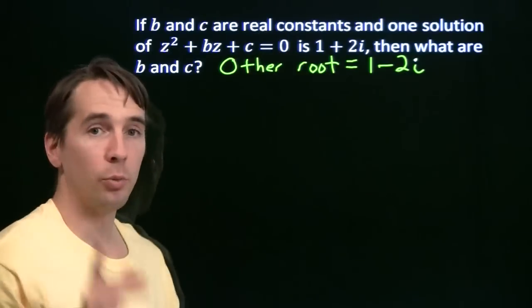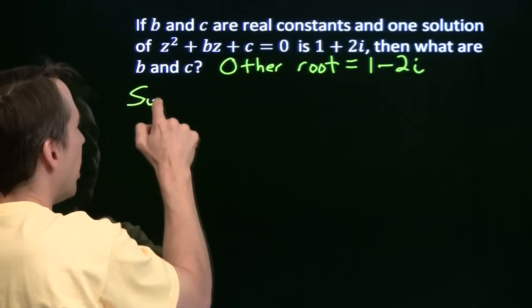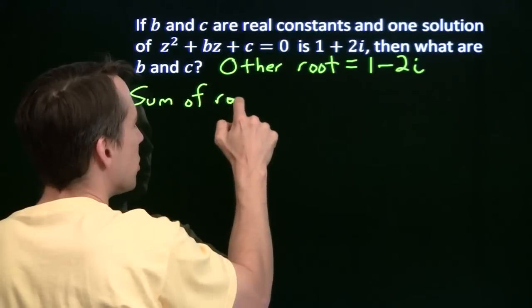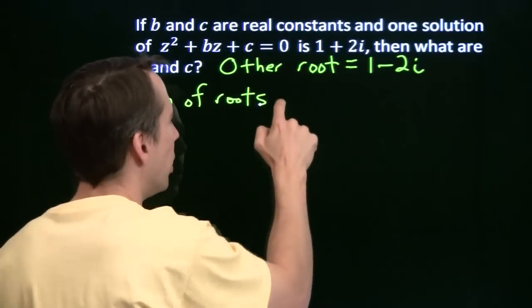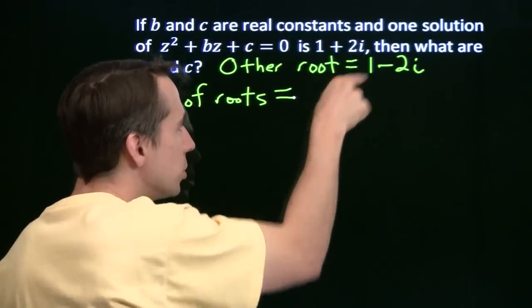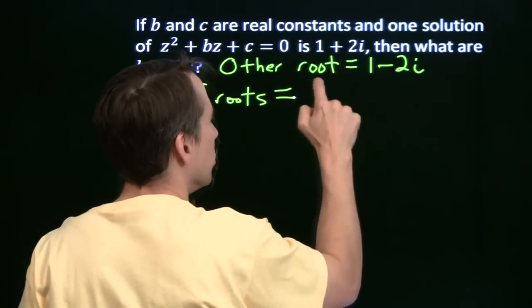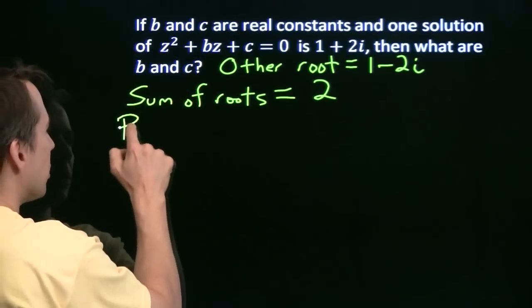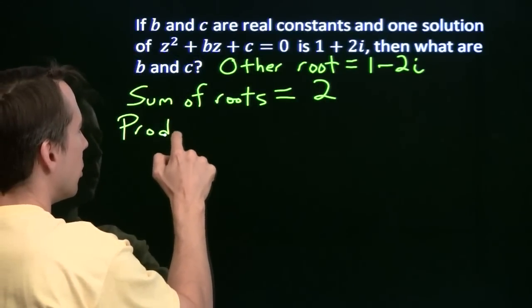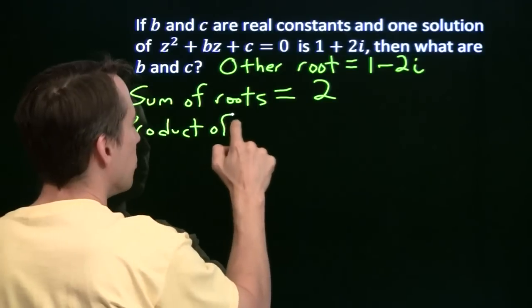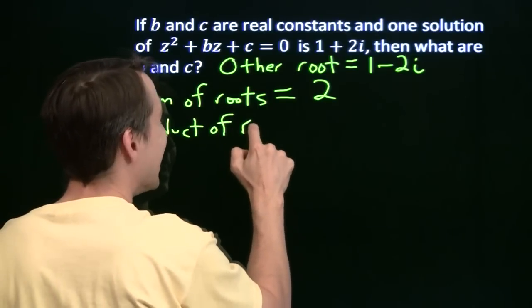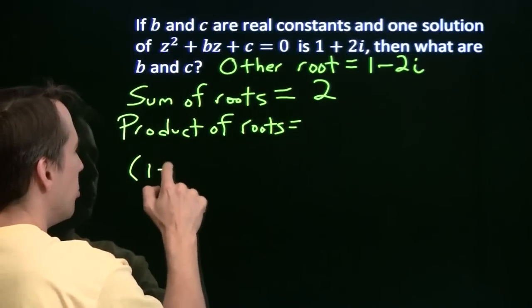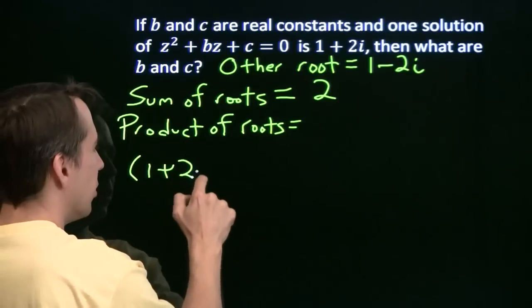Now once we have both roots, we can figure out the sum and the product of the roots. The sum of the roots: add these up — 1 and 1 is 2, 2i minus 2i, those cancel and we just have 2. And the product of the roots — well, we just multiply these. They're conjugates, so we know that we're going to get a real number. Let's go ahead and multiply those out.